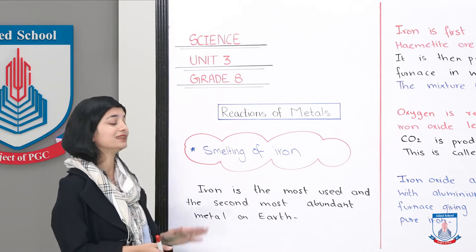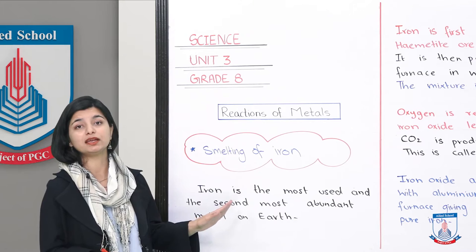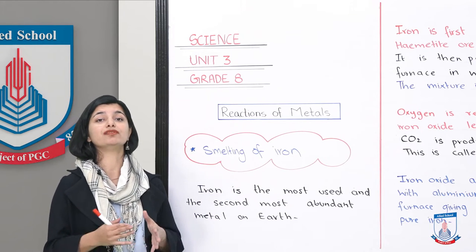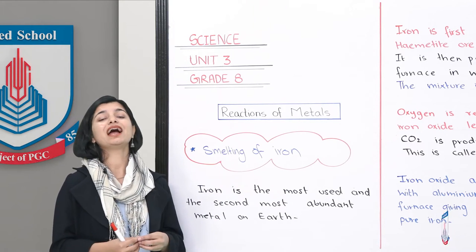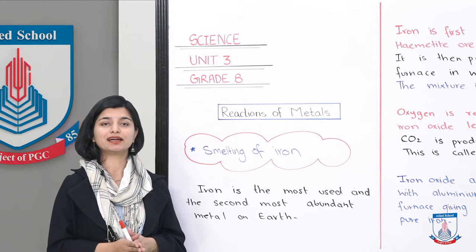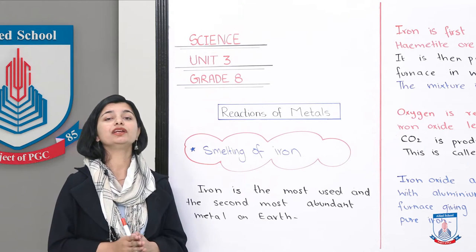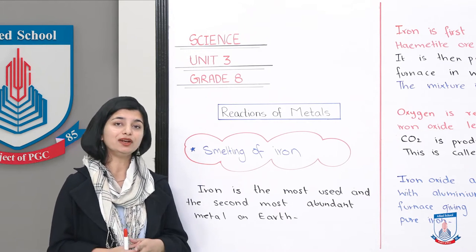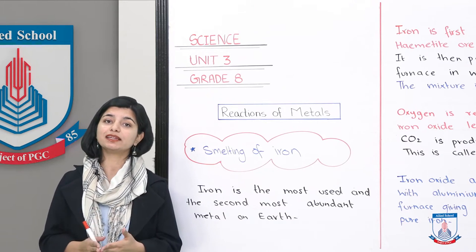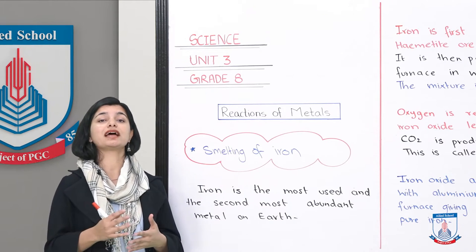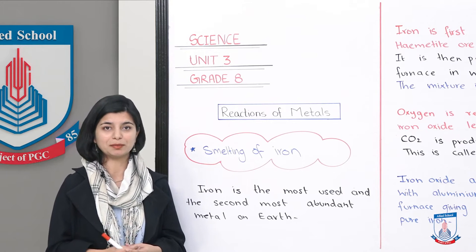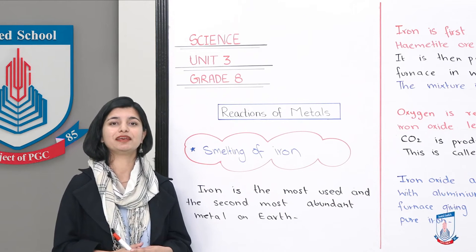For example, we will talk about iron. We will discuss the smelting of iron in today's lecture. Iron is first separated from its ore called hematite. We will see how iron is extracted from hematite ore and what impurities are present. That's what today's lecture is all about. So let's begin.